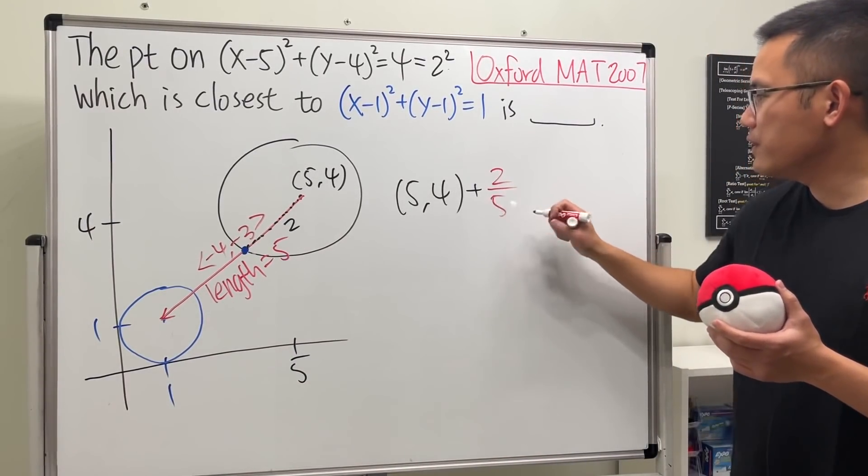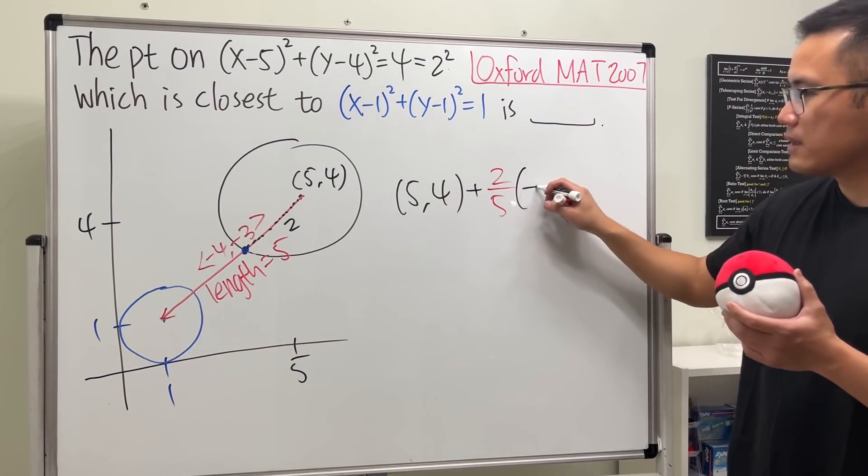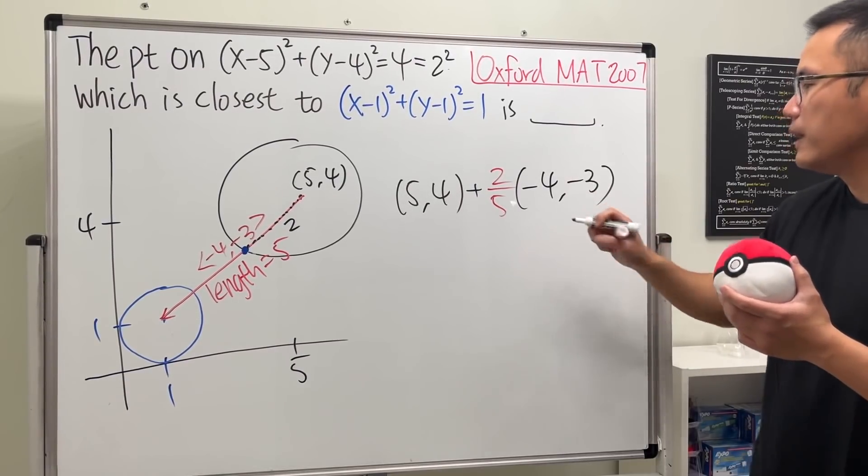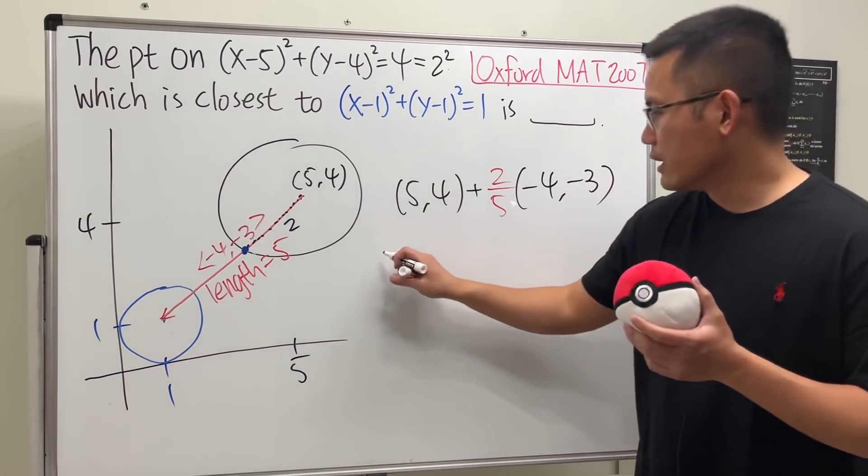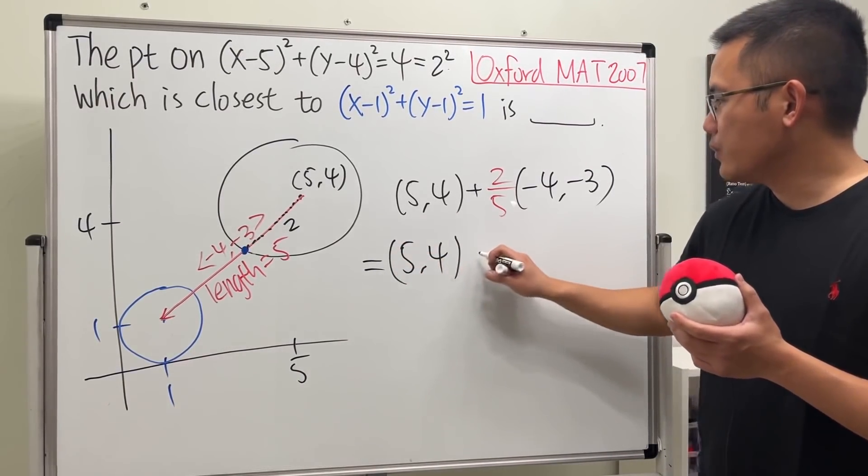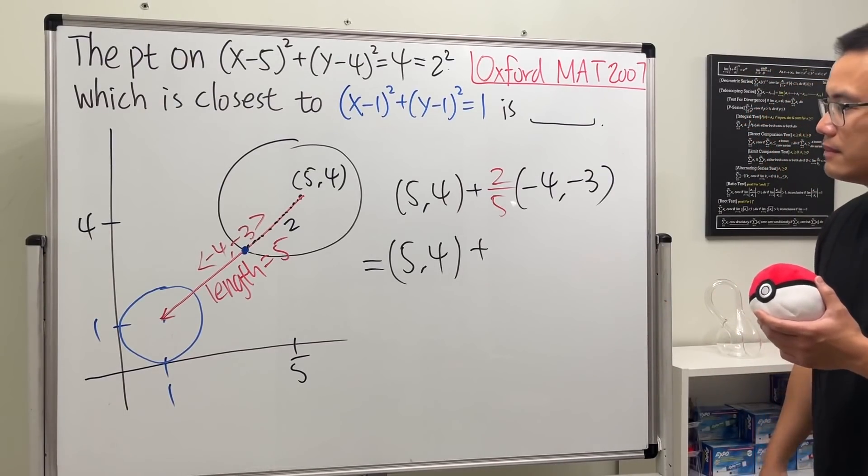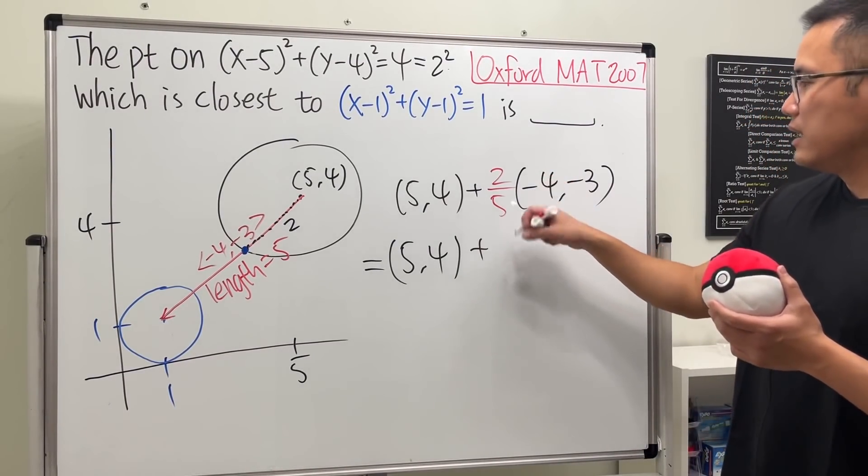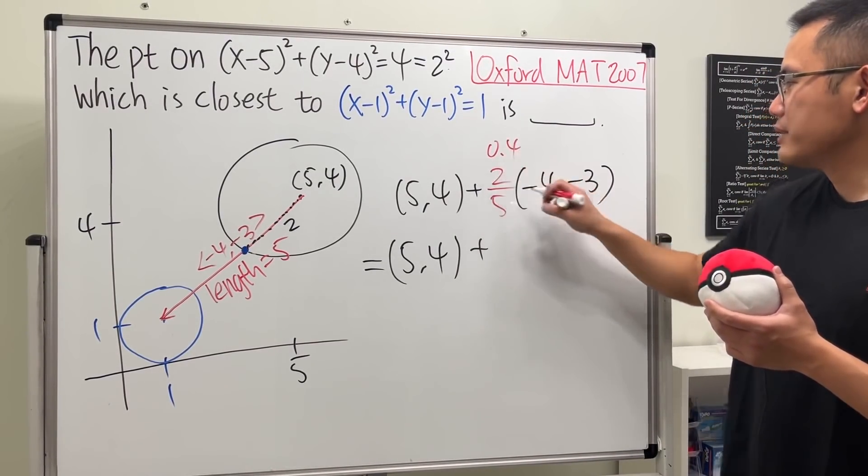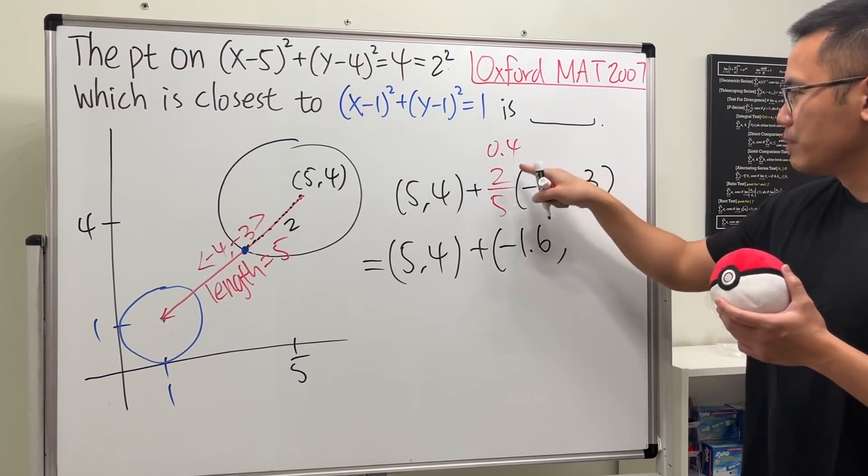So we just have to add two-fifths, so just say plus two-fifths and multiply by that vector, which is (-4,-3), and just go ahead and work it out. So let's see, this is (5,4) and then we add it with, oh man, this is 0.4, so multiply it by that we get -1.6, and then multiply that we get -1.2.